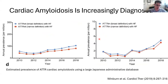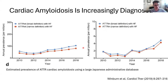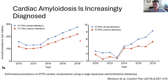What we're seeing in most centers is an increase in the prevalence — or at least recognition — of amyloid. Data from a Japanese administrative database looking at prevalence of ATTR wild type or hereditary ATTR patients with heart failure over time showed that from 2012 to 2018 — just six years — there was more than a doubling in the prevalence of amyloid. A lot of this is related to increased recognition and diagnosis. Even if you look at patients without heart failure, there's a significant prevalence increase.